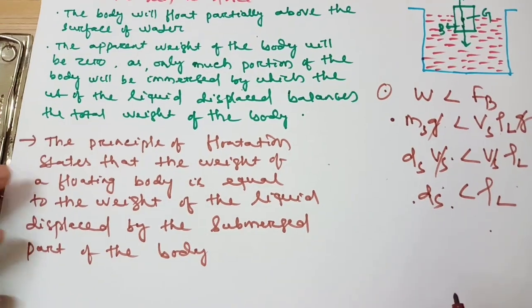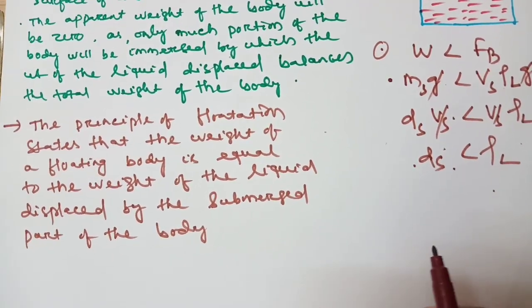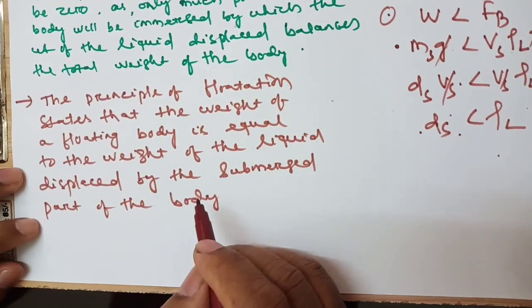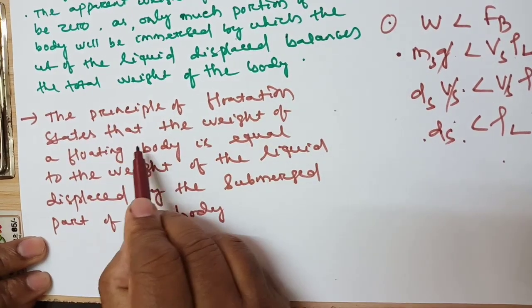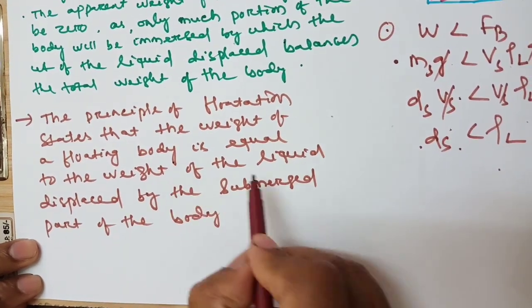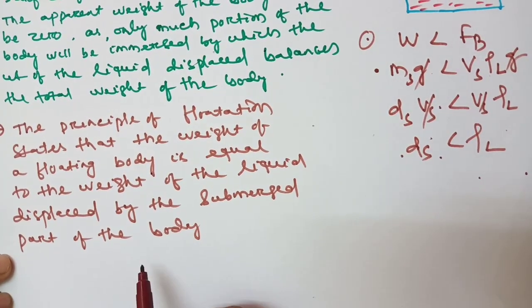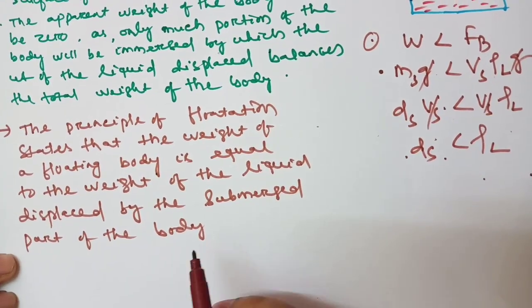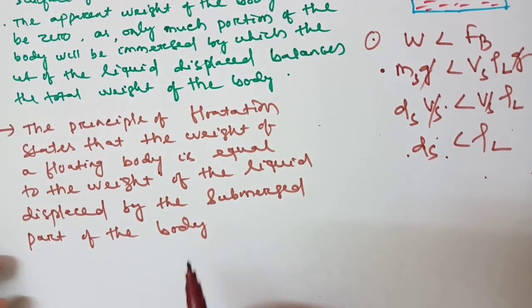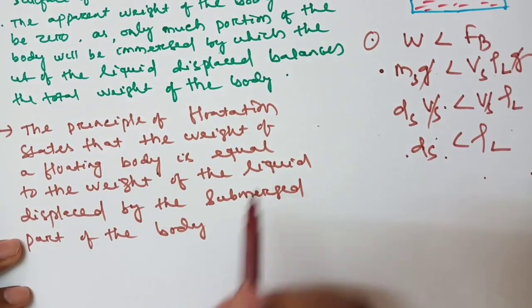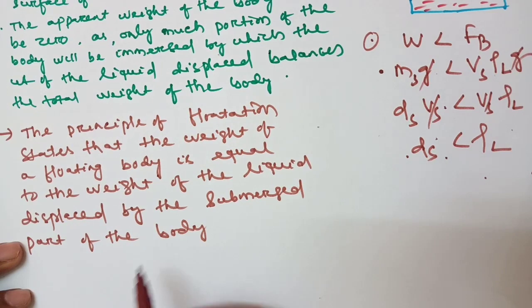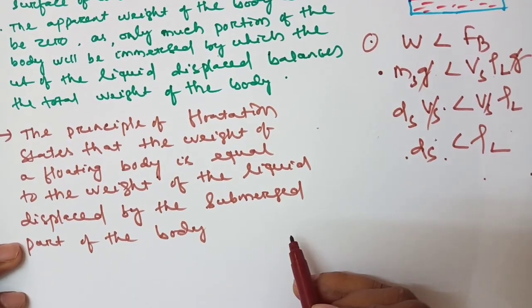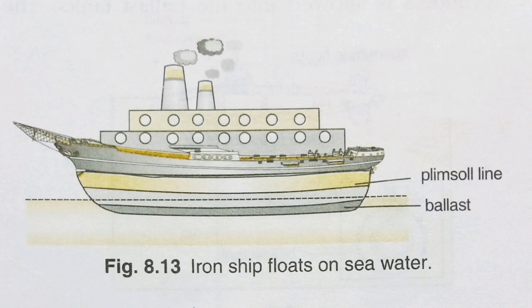So in the three cases we understand the conditions for floating and sinking. From this we get the principle of flotation — the law of flotation. The principle of flotation states that the weight of a floating body is equal to the weight of the liquid displaced by the submerged part of the body. We will now discuss some applications of the law of flotation.